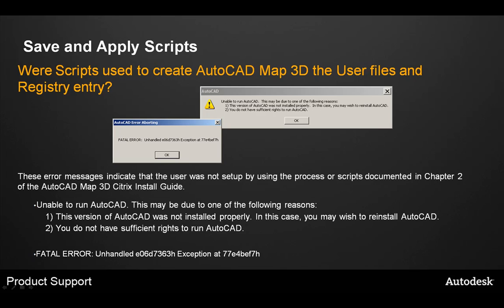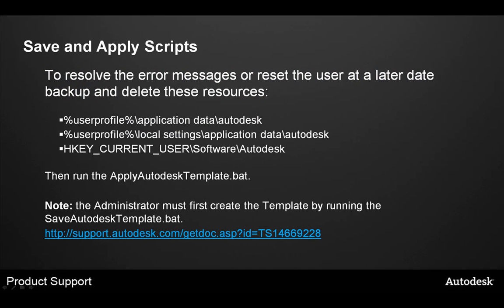The most common problem that users run into is that they did not use the scripts to save the AutoCAD template from the installing user and then apply that to the additional users that are going to be using the application. A couple of error messages associated with this are the "unable to run AutoCAD" message and a fatal error. If the user encounters these error messages, the way to resolve this is to reset their user.